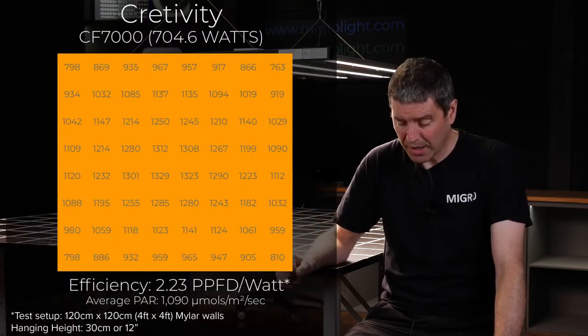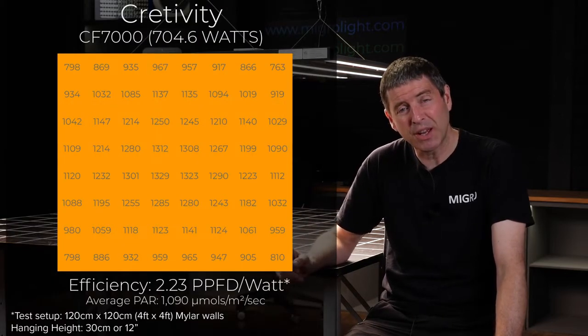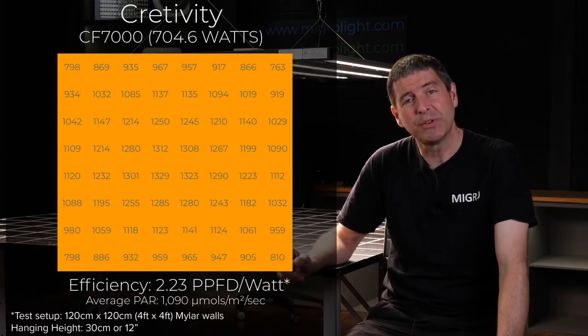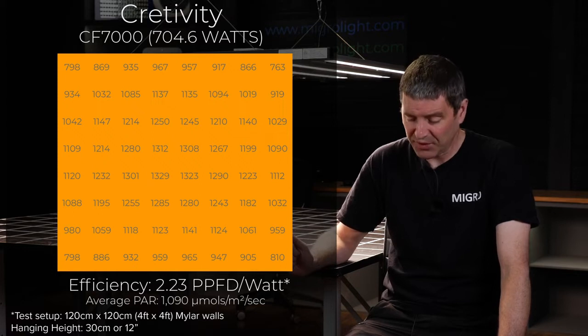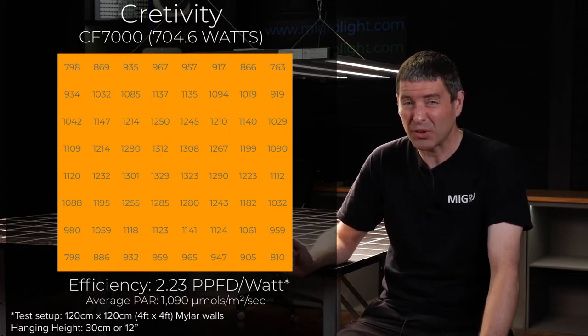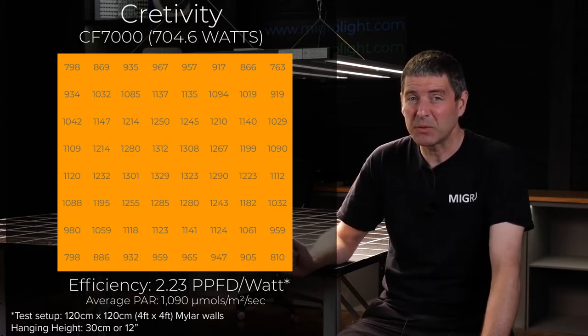So the average power output was 1090 micromoles and given the power consumption of 704.6 watts, the system efficiency was